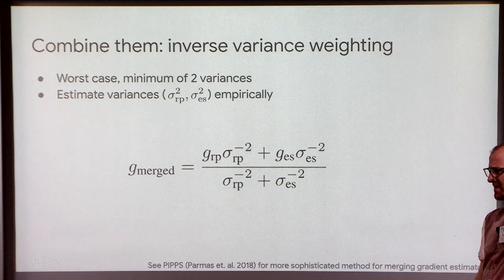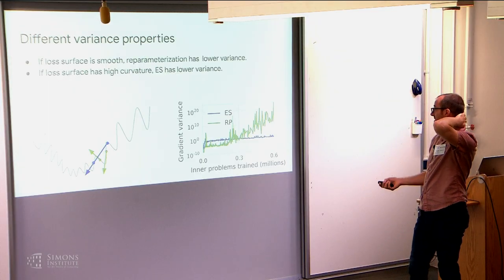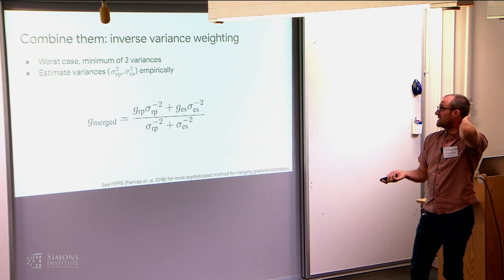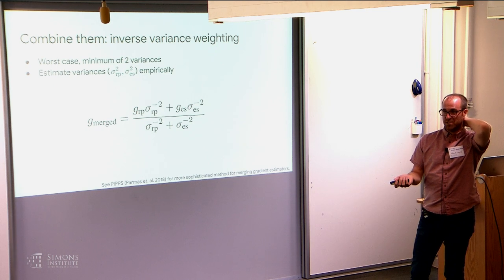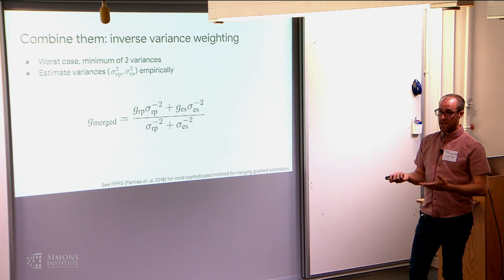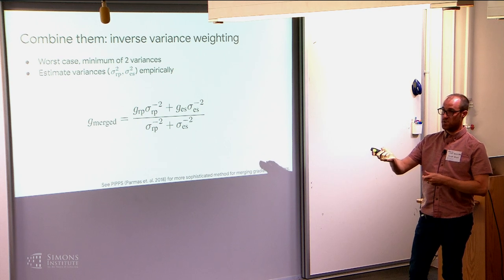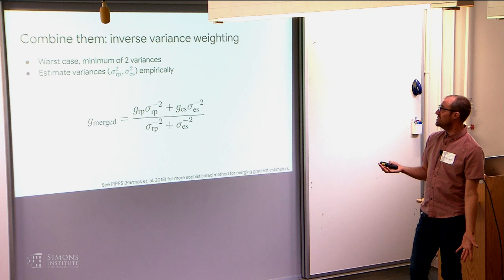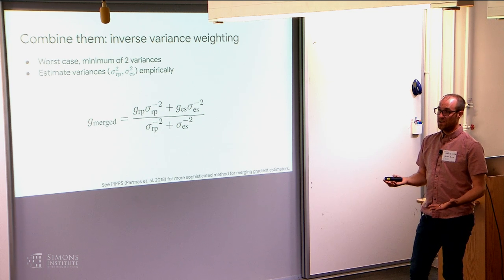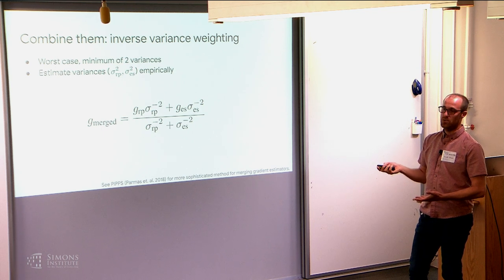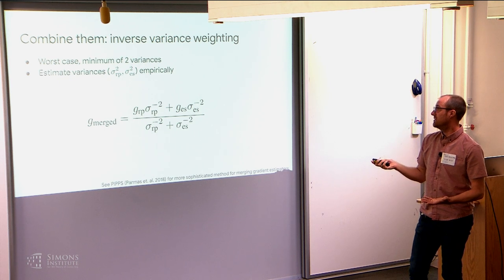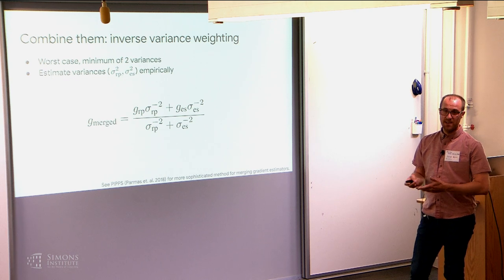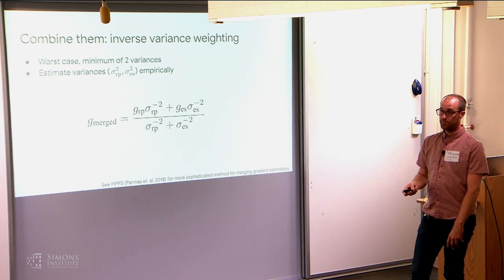Given that plot, there's a role for starting with reparameterization before getting later in training. One strategy might be to start with one and then switch to the other when it goes unstable. We actually did something slightly more principled but also more expensive: we just always computed both. You can reuse the same points for both estimators — evaluate the functions at the same points, evaluate the gradients, and use them for both estimators. Specifically, you can use inverse variance weighting to come up with an optimal combination. Taking a weighted sum of the two unbiased gradient estimators, a nice property is that the worst-case variance of the merged gradient is the minimum of the variance of either of the two estimators.